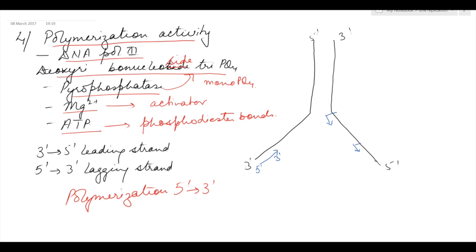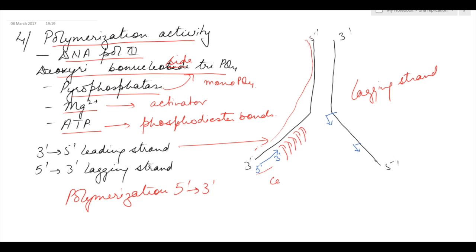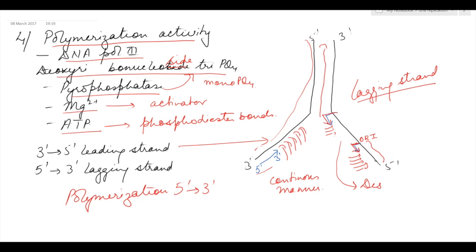Because polymerization occurs in the 5' to 3' direction, the 3' to 5' strand of DNA is the leading strand, while the 5' to 3' strand is the lagging strand. On the leading strand, as soon as the two strands start separating, the new strand begins forming immediately in a continuous manner. On the lagging strand, after a short portion of DNA opens, its ori is recognized, an RNA primer is formed, and then deoxyribonucleotides are added. Then further opening, another ori, another RNA primer, and so on — the new strand is formed in a discontinuous manner.